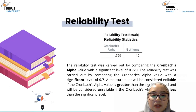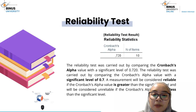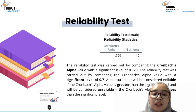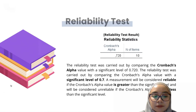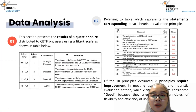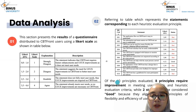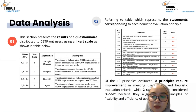From the reliability test, comparing the Cronbach's alpha value against a significance level of 0.7: a measurement is considered reliable if Cronbach's alpha is greater than 0.7, and unreliable if it is less. Of the 10 principles evaluated, 8 principles require improvement. Two statements are considered good because they align with the principle of flexibility and efficiency of use.